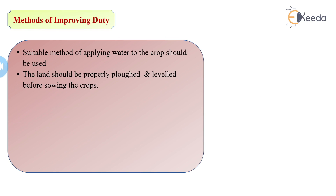The next improvement method is that land should be properly plowed and leveled before sowing the crop. If the land is not properly plowed or leveled, there is a chance of wastage of water when it is allowed to flow over the surface, which reduces duty. To overcome this, we should properly plow and level the land before sowing crops.